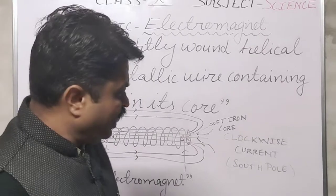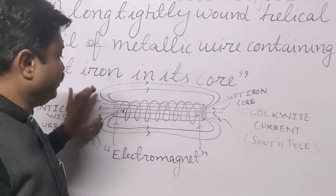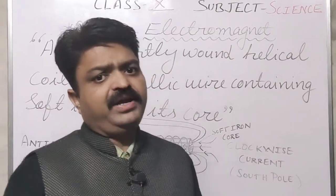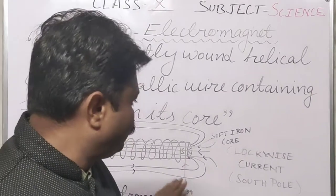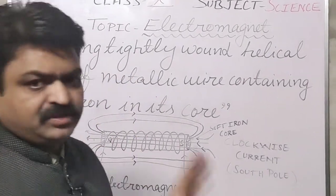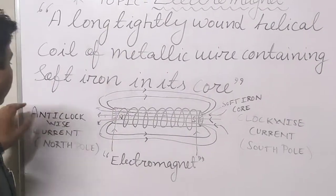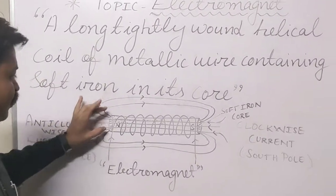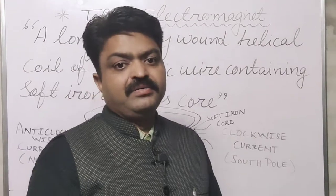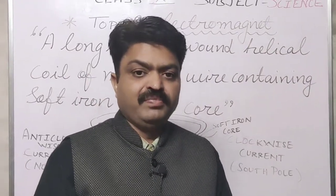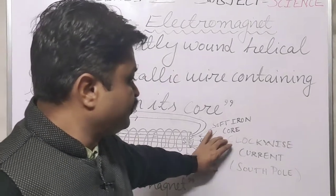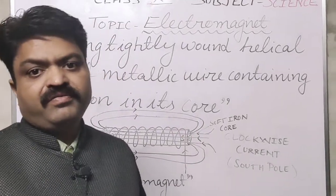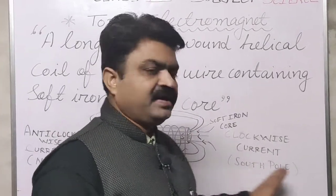This electromagnet also has a north pole and south pole, and we can find the north pole and south pole with the help of the current. If the current is anticlockwise, then that side of the electromagnet behaves like a north pole. If the current is clockwise, then that particular side of the iron core behaves like a south pole.